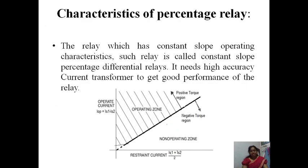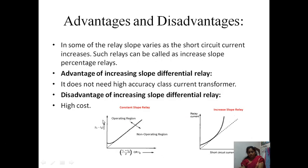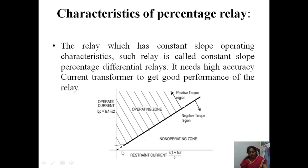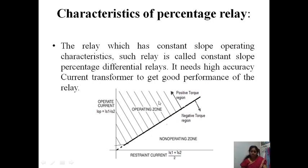The characteristics of the percentage or bias differential relay: a relay with constant slope operating characteristics is called a constant slope percentage differential relay. It needs high-accuracy current transformers for good performance. On the X-axis is (I1 + I2)/2 and on the Y-axis is the operating torque, I1 minus I2. The area above the line is the operating zone and below is the restraining zone.